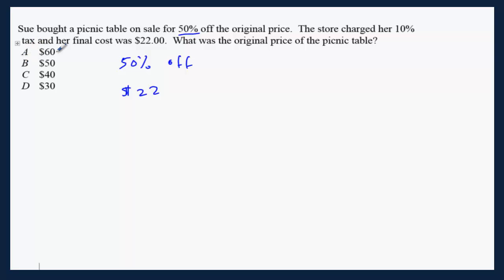Let's see choice A. If the original price is $60, she has 50% off, so after 50% off, her new price is going to be $30.